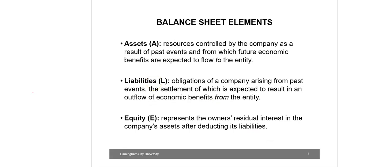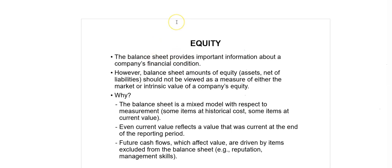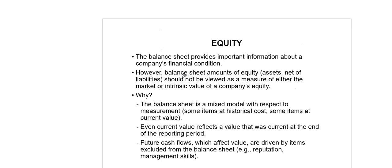For all financial items, an item can only be recognized in the financial statement if it is probable that any future economic benefit associated with the item will flow to or from the entity, and if the item has a cost or value that can be measured with reliability. Though the Balance Sheet provides important information about assets, liabilities and equity, it reports accounting values based on measurement bases — some items are measured at historical cost, while others are measured at current value.